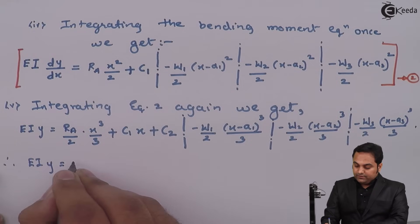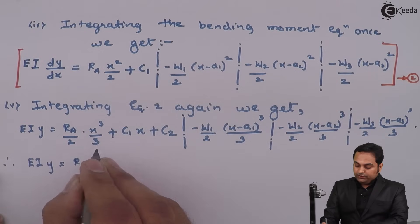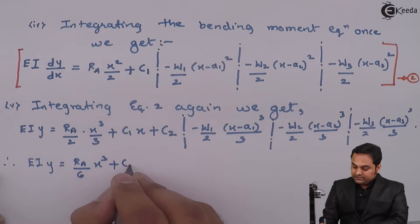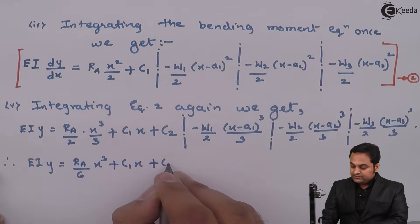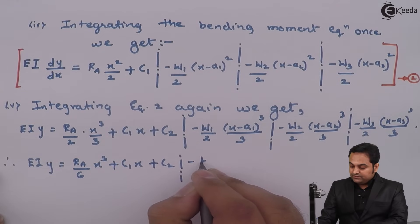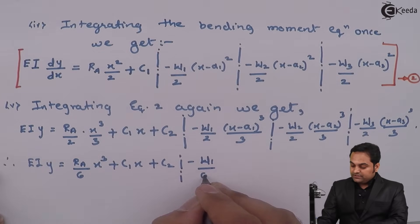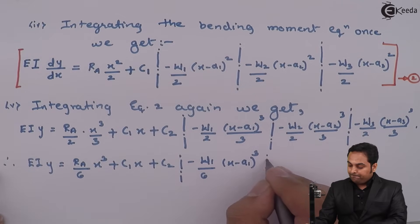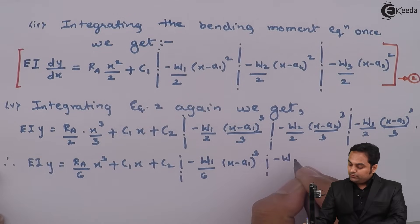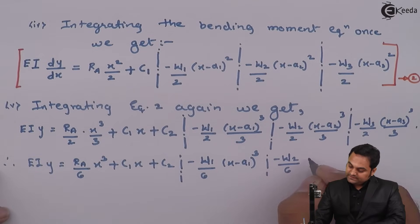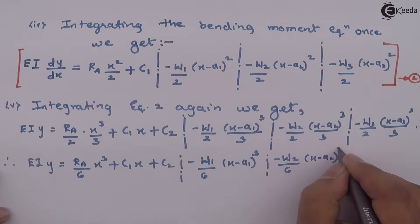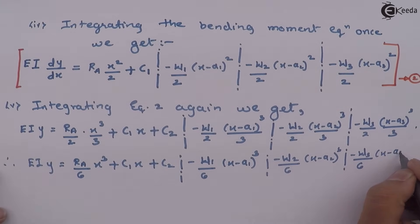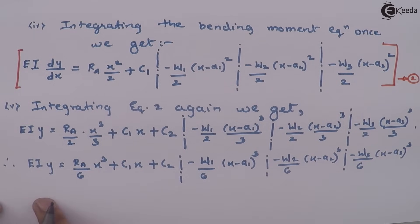Minus W3/2 into (x minus a3)² integration becomes (x minus a3)³ divided by 3. Therefore EI·y equals RA/6·x³ plus C1·x plus C2, minus W1/6·(x minus a1)³, minus W2/6·(x minus a2)³, minus W3/6·(x minus a3)³. This is equation number three.